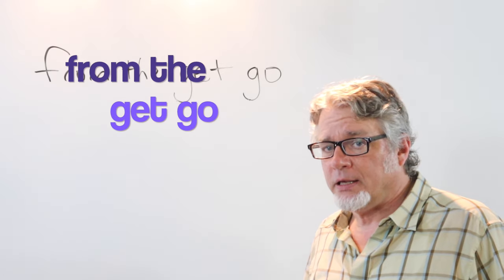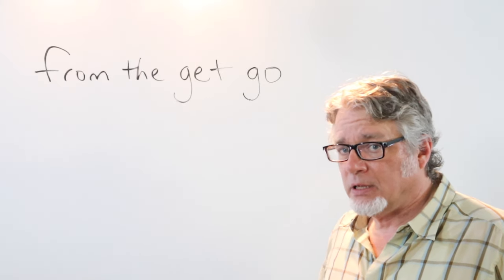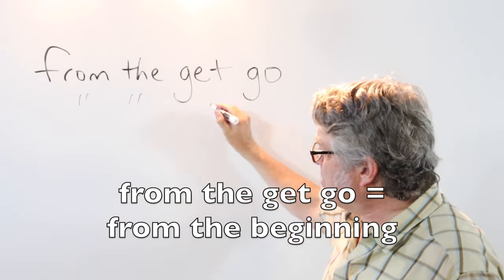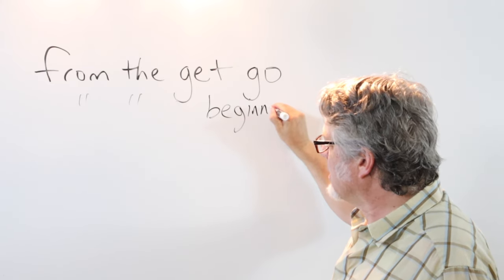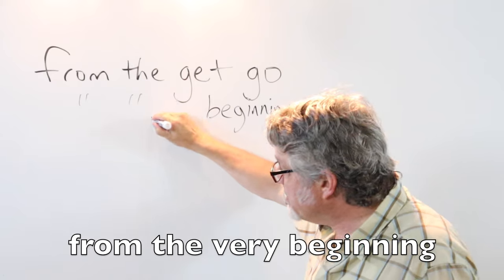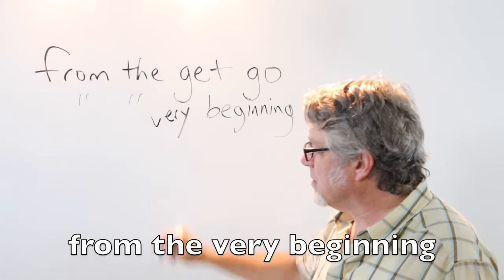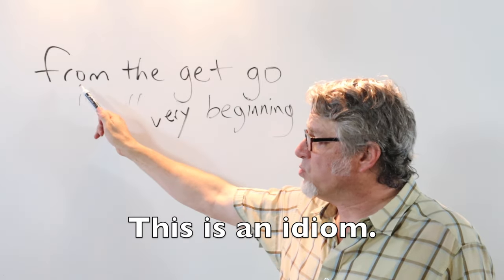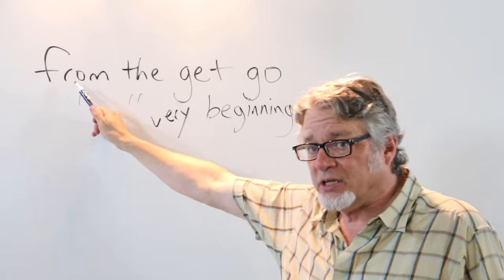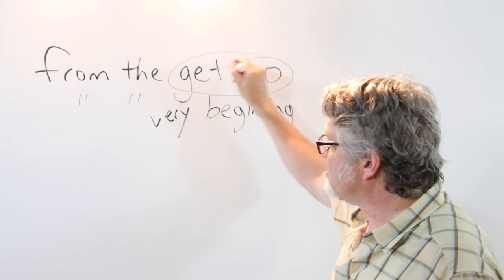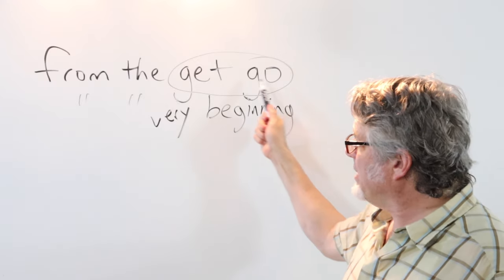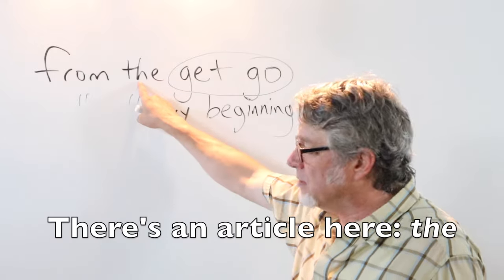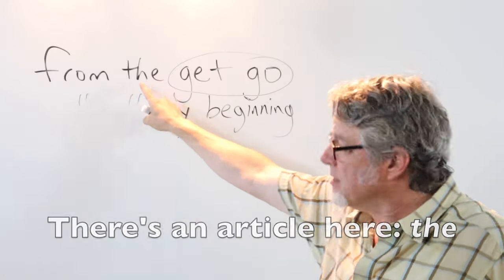From the get-go is an idiom. It's similar to from the beginning of something or from the very beginning, from the start of something. This is an idiom that begins with a preposition and then this functions as a noun. You can't change this to any other form. Notice that there is an article here which supports the idea that this is functioning as a noun.